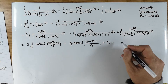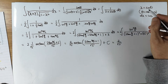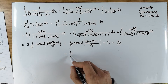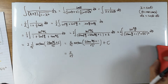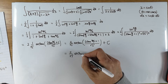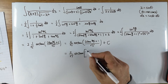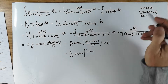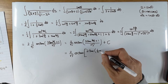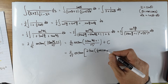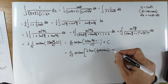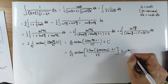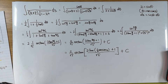So the answer is 2/√3 arctan of (2 tan(½ arcsin x) + 1)/√3 plus C. Since theta is arcsin(x), theta/2 is ½ arcsin(x). So the integral has been done — quite a disgusting answer.